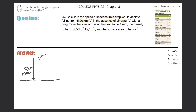The raindrop starts with an initial velocity of zero and falls all the way down, and we're looking for the final velocity. Essentially this raindrop is in free fall, so the acceleration is due to gravity: negative 9.80 meters per second squared. The displacement y is negative 5,000 meters.